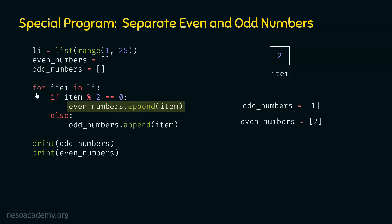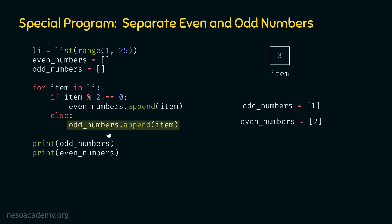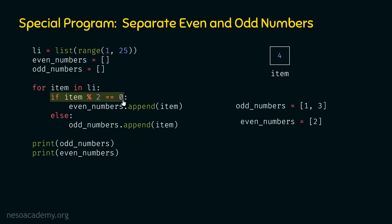Next, item receives value 3. Is item mod 2 equal to 0? No — so the else block executes and 3 is appended to the odd numbers list. Then item receives value 4. Is item mod 2 equal to 0? Yes — 4 is divisible by 2, so 4 is appended to the even numbers list. In this way we can continue for all items.